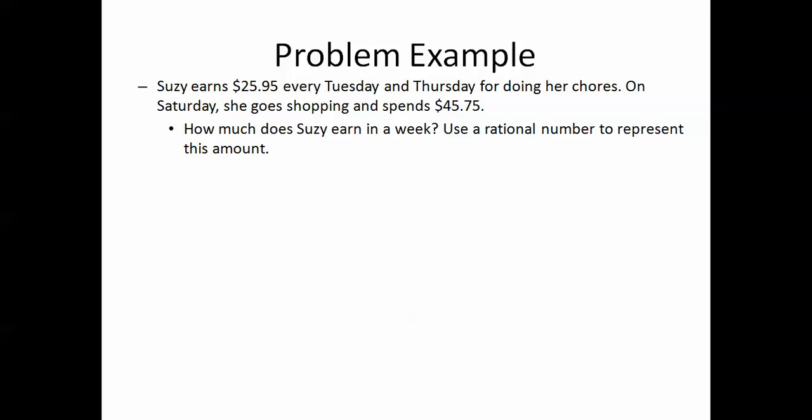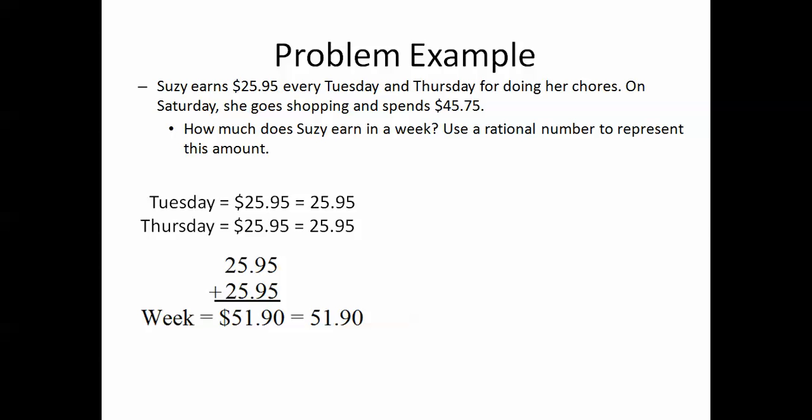So let's examine the first question. How much does Suzy earn in a week, and to represent this as a rational number. So, we are told in the question that on Tuesday and Thursday, she earns $25.95. Now, I am going to represent these two as rational numbers, and that means to get rid of our dollar sign. So we get $25.95 and $25.95. So, in a week, to find out how much she earns, we have to add these two numbers together.